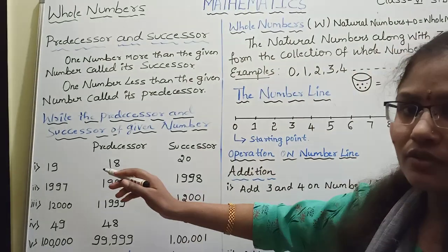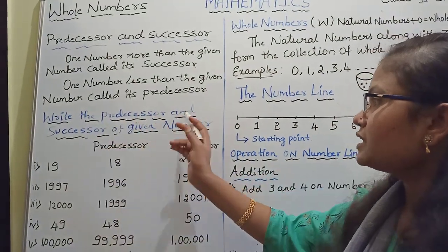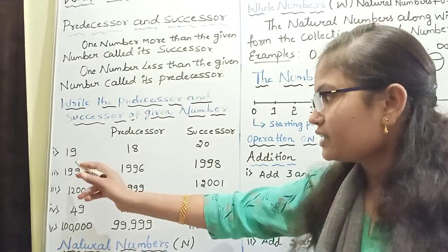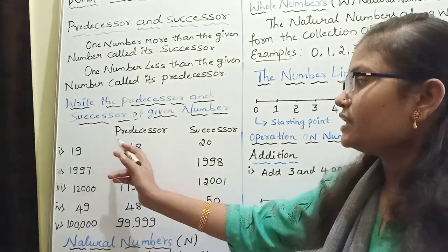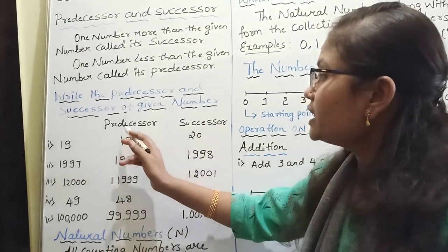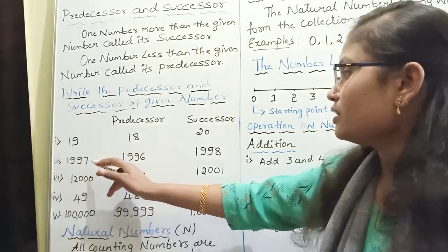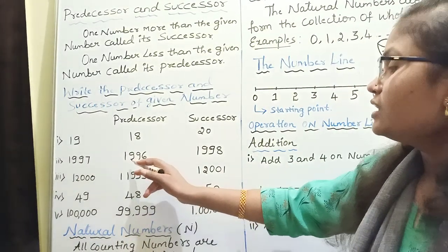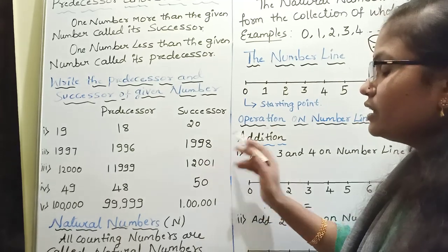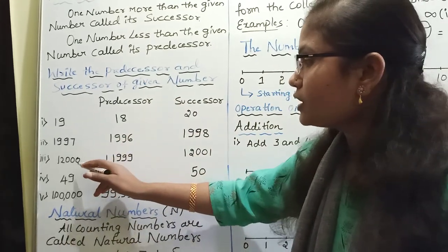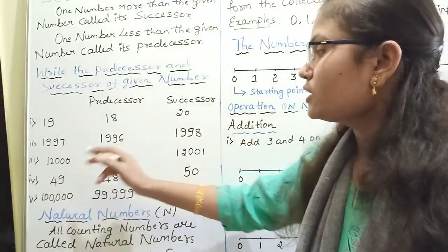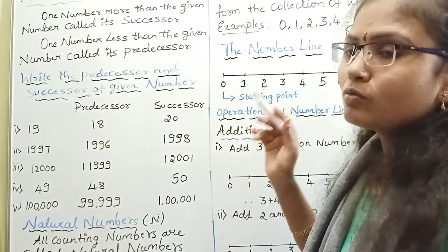Now you can observe here a few examples. Write the producer and successor of the given number. The first number is 19: producer of 19 is 18, successor of 19 is 20. Producer of 1997 is 1996, successor is 1998. Producer of 12,000 is 11,999, successor of 12,000 is 12,001.